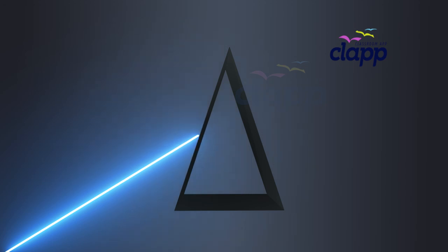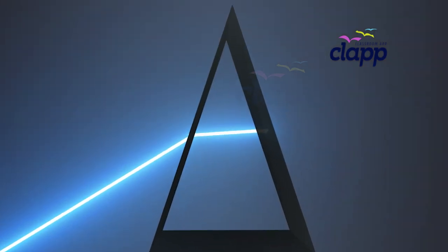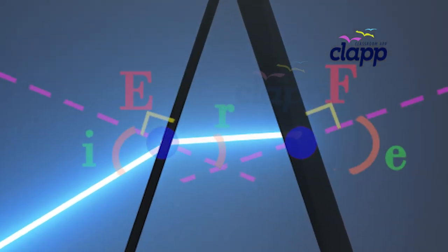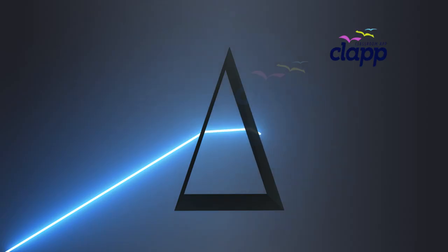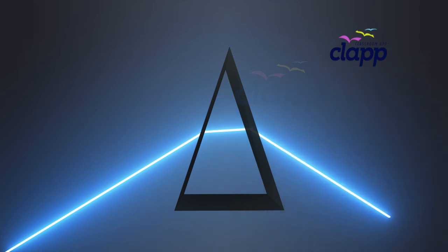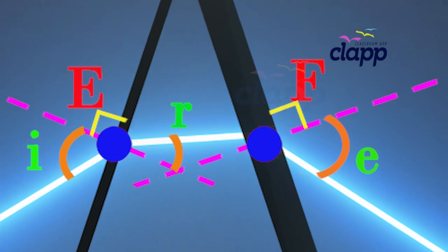You may note that a ray of light is entering from air to glass at the first surface AB. The light ray on refraction has bent towards the normal. At the second surface AC, the light ray has entered from glass to air. Hence it has bent away from the normal.